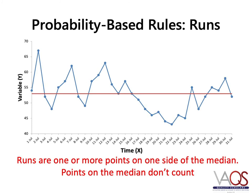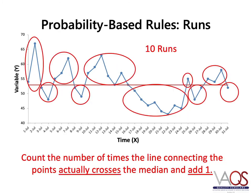To use the probability-based rule for runs, there are two steps. The first step is to count the number of usable data points — the number of data points that are not on the median. In this case, we have 31 data points and two that fall on the median, giving us 29 usable data points. The second step is to count the number of runs. A run is one or more points on one side of the median; points on the median do not count towards a run. In this chart, we have circled the runs. Note that on the fifth run, the point on the median is not counted and does not break the run. An easy way to count runs is to count the number of times the line connecting points crosses the median and add one. In this example, the line crosses the median nine times, giving us 10 runs.